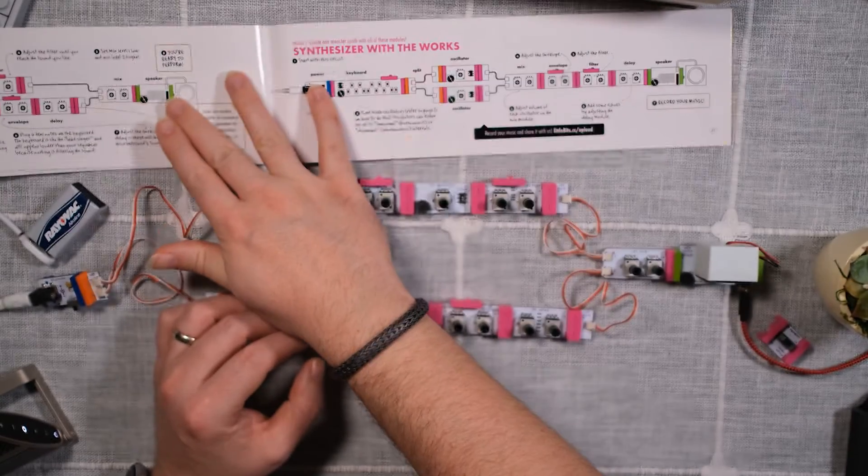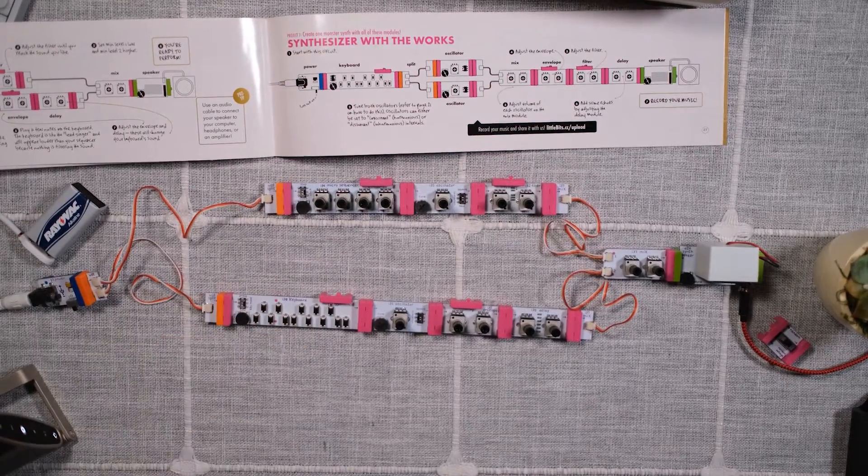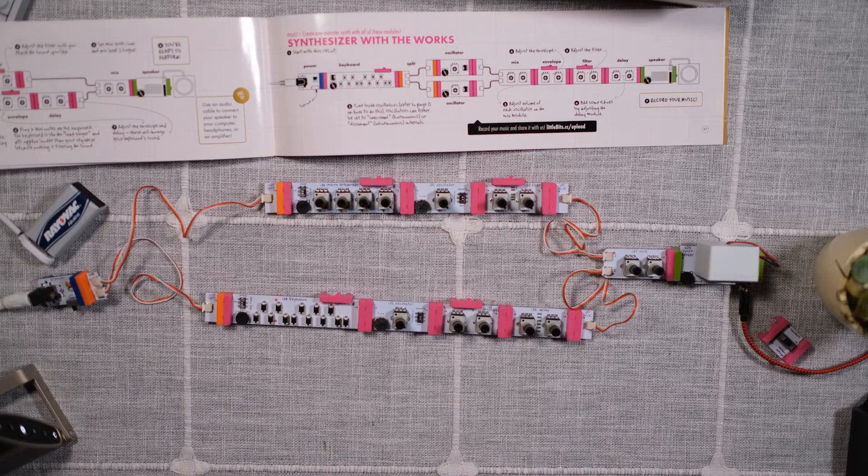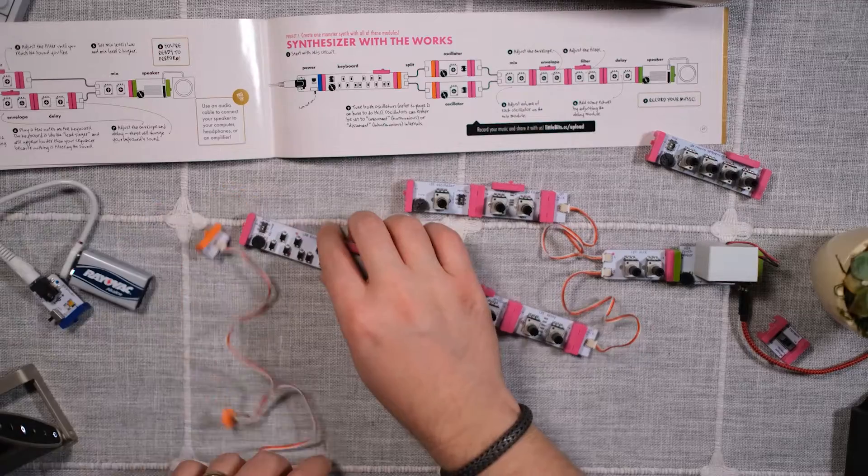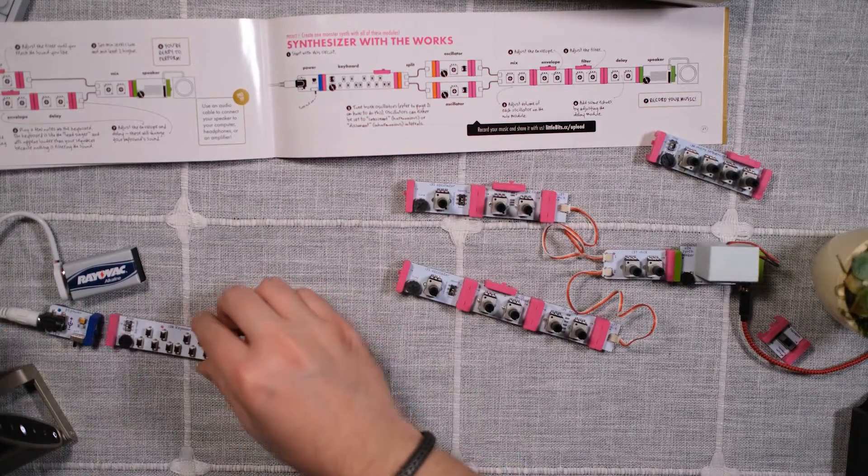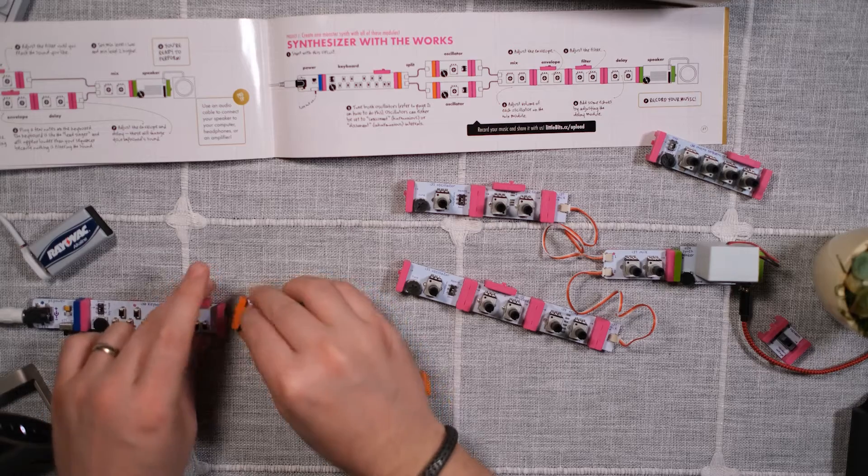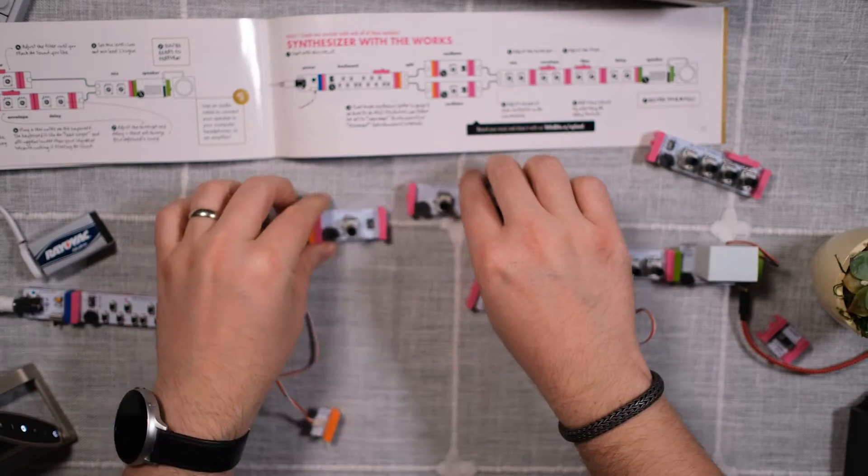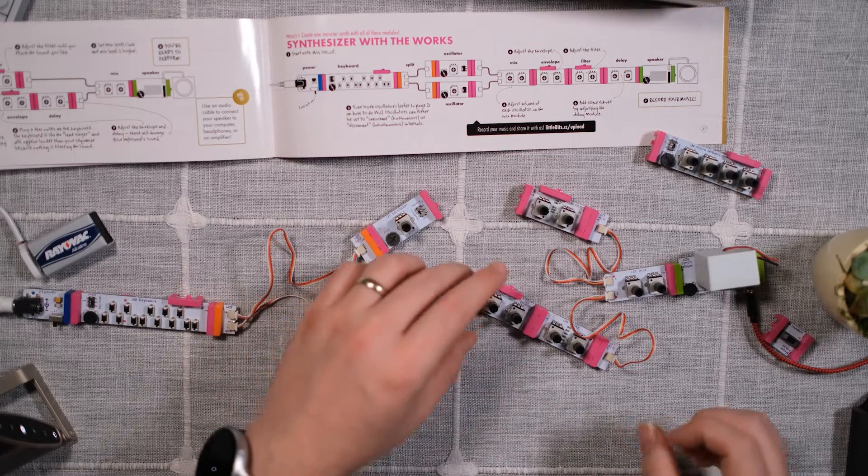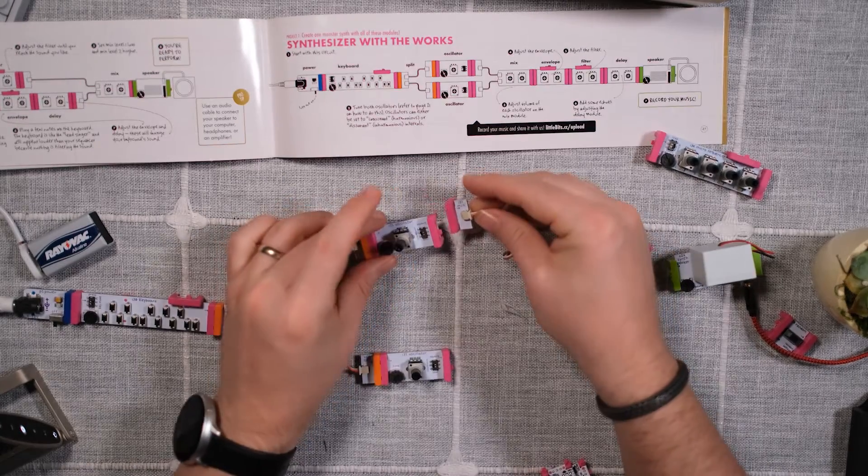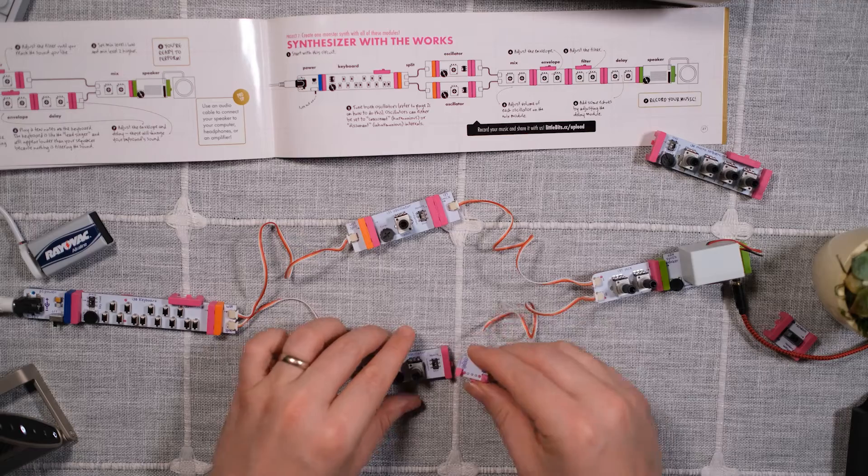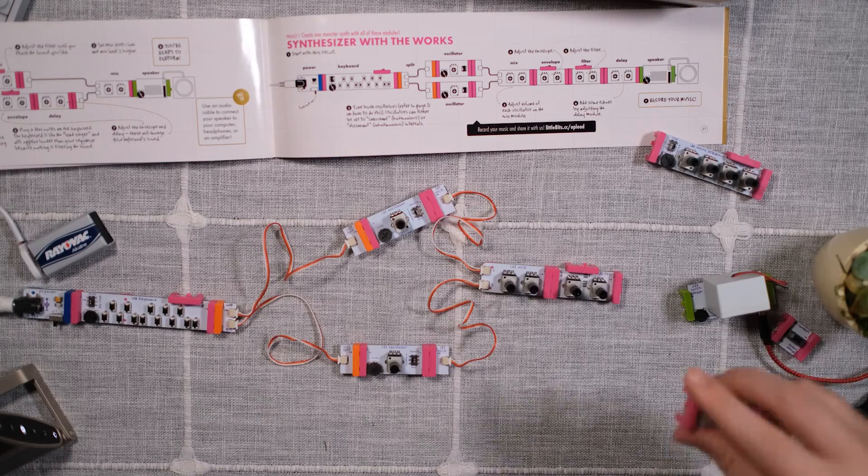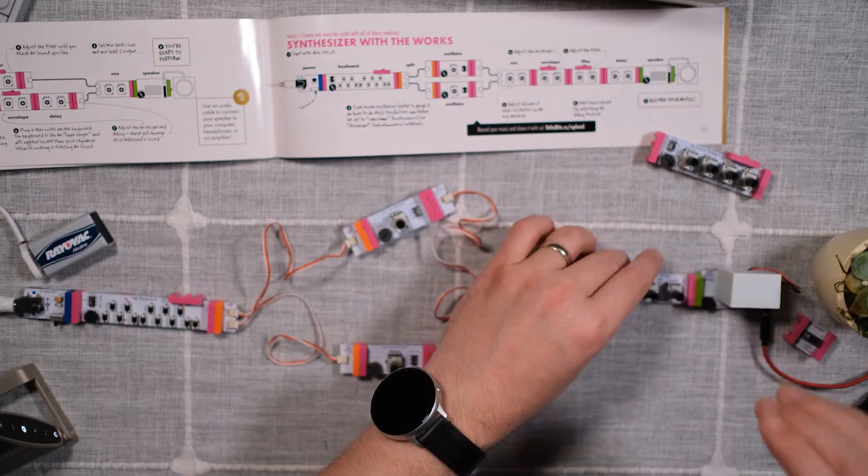And the next one is just called synthesizer with the works, which creates a synthesizer that has a richer, fuller sound, and that actually sounds like a real synthesizer. So this one has the keyboard first, and then it has the keyboard going into two oscillators instead of just one. So this is very much like building Legos. And then you have the mixer going into both of the oscillators. And then you have the filter going into the delay, and the delay going into the output.